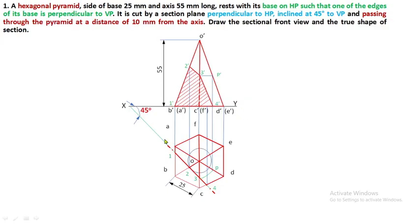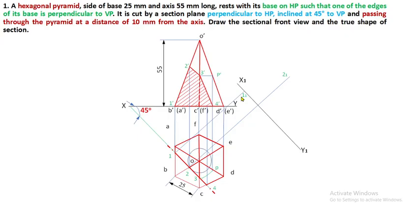Draw another reference line X1Y1 which is parallel to the section plane at the same inclination of 45 degrees. Now draw perpendicular projectors at each section plane cutting point 1, 2, 3, 4. At point 1, measure the distance from XY — point 1 lies exactly on XY, so point 1 on the true shape is also on X1Y1.